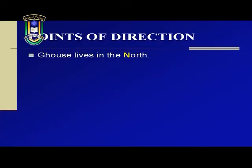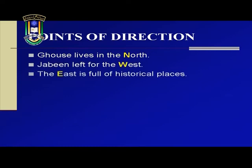Capital letters are used to indicate points of direction. Gauss lives in the North. Jabin lived for the West. The East is full of historical places. North, West, and East are points of direction and they have been capitalized. Why did I say this is very easy to remember? Because, like oceans, there are only four points of direction: East, West, North and South. You don't have to remember much.